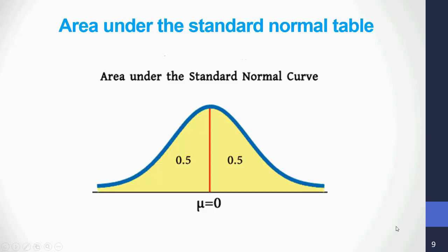Area under the standard normal table. In this lecture we will start finding or calculating the probabilities or areas under the standard normal curve. But first, let's look at some important properties. When we draw this curve, the total area under this curve is 1.0. The area to the left of 0 equals 0.5, and the area to the right of 0 equals 0.5.